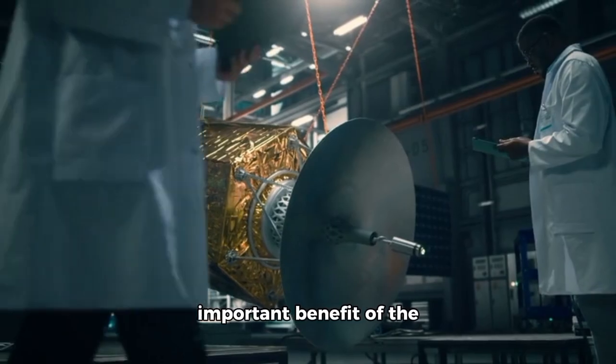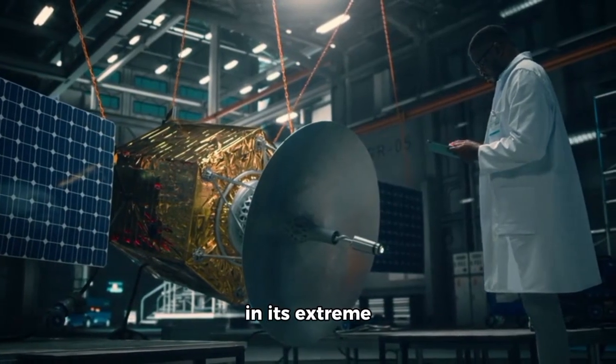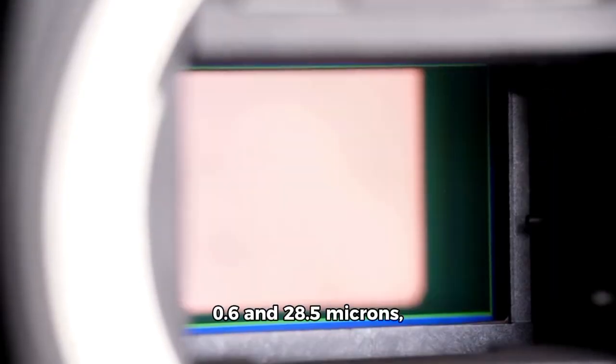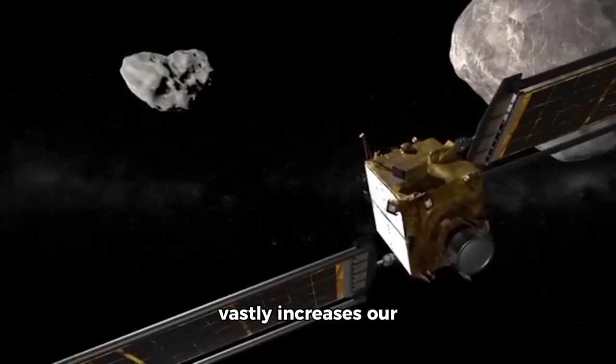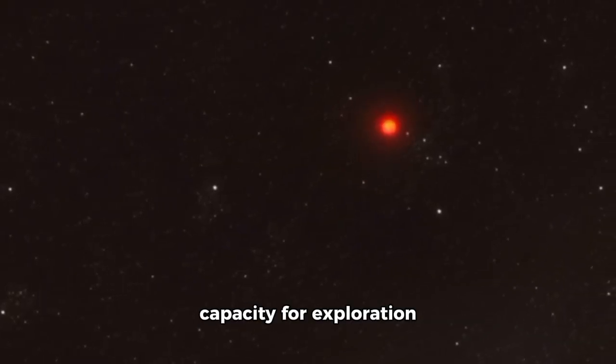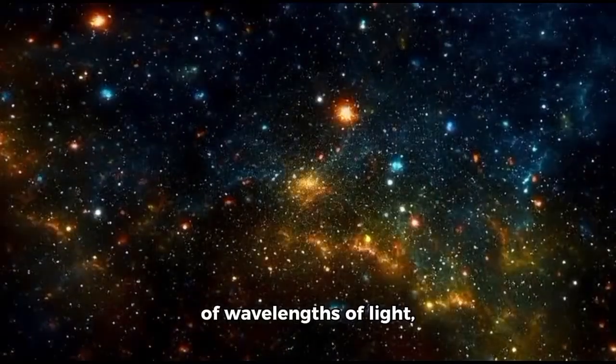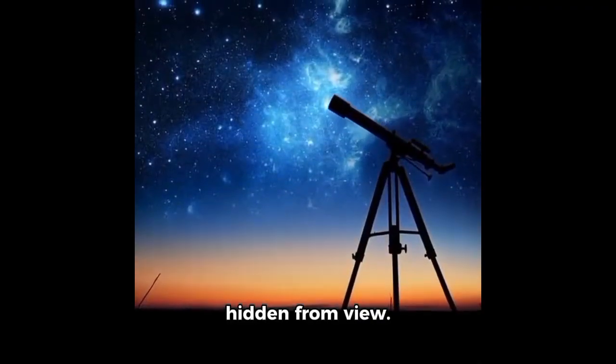However, the most important benefit of the James Webb Telescope lies in its extreme sensitivity to infrared light. It can detect wavelengths between 0.6 and 28.5 microns, covering the mid-to-red end of the infrared spectrum. This remarkable feature vastly increases our capacity for exploration and learning about the universe from a variety of wavelengths of light, unveiling phenomena and details that were once hidden from view.